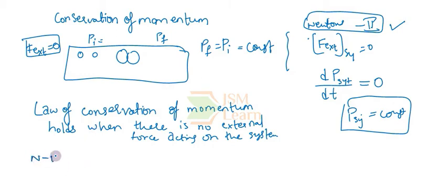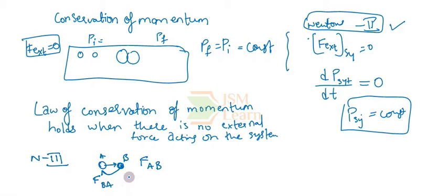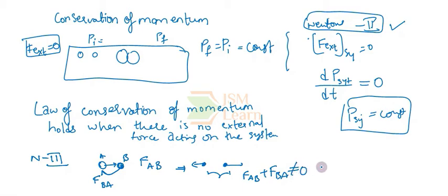But conservation of momentum can also be understood from Newton's third law. It says that if particle A exerts a force FAB on particle B, then particle B will also exert the same amount of force in the opposite direction, FBA, on particle A. For your information, these forces will not cancel each other because, though they are equal and opposite, they are acting on two different bodies. So FAB plus FBA is not equal to zero — the net force is not zero.